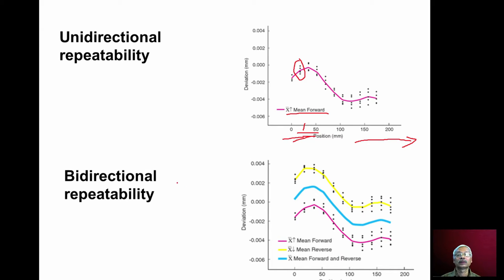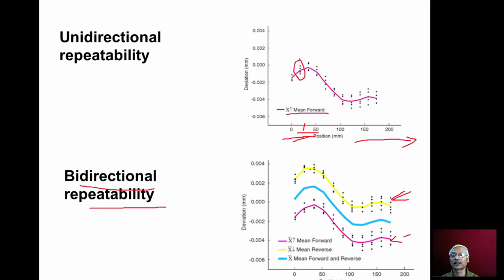Similarly, in the reverse direction also we should conduct the experiment to get the bidirectional stability performance. This curve shows the error in the forward direction, the yellow line indicates the error in the reverse direction, and the blue curve indicates the average of both. These experiments should be conducted for all three axes — x-axis, y-axis and z-axis — and then we will know what is the repeatability of the stage.